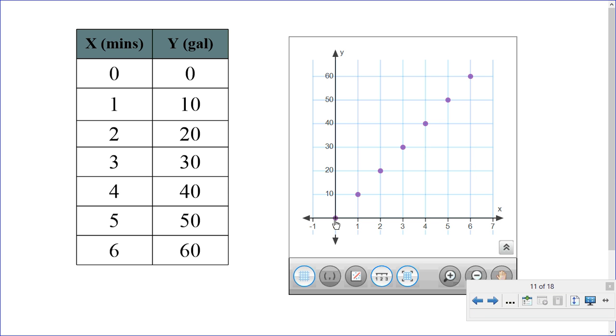Notice 0, 0, 1, 10, 2, 20, 3, and we have minutes on the x-axis, as we had in our chart, and the gallons go up because that's a dependent variable, and you should be aware that the dependent variable goes up on the y-axis, and the independent variable goes across on the x-axis.